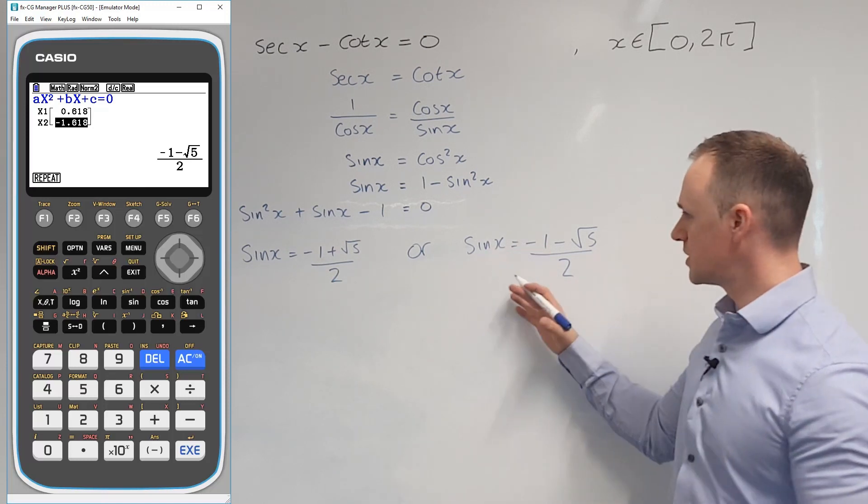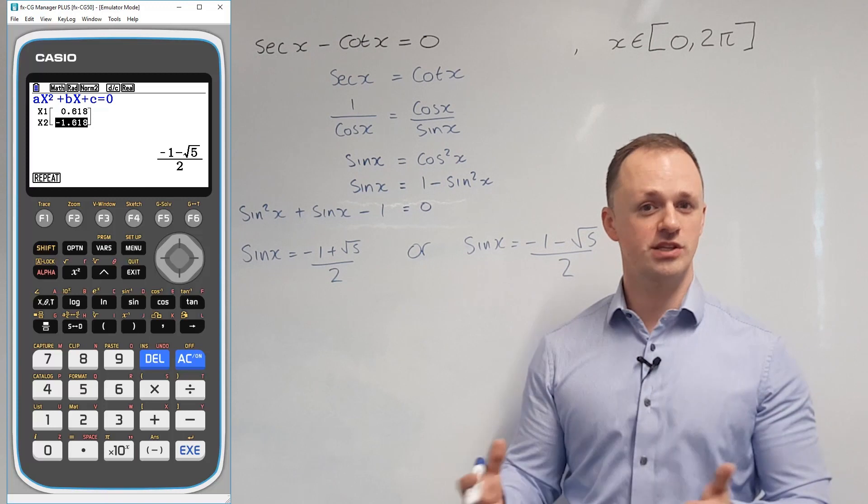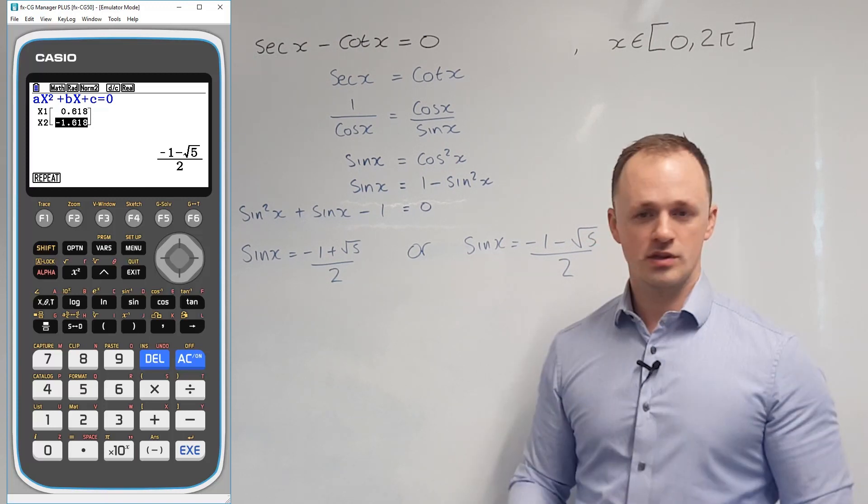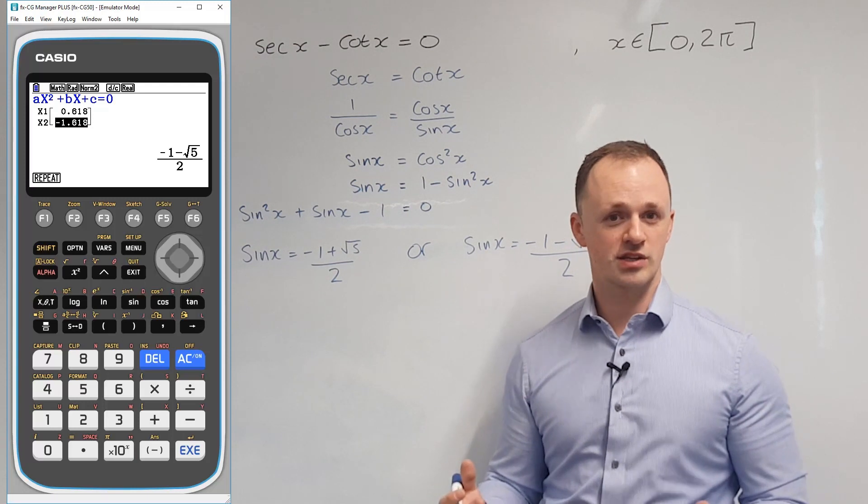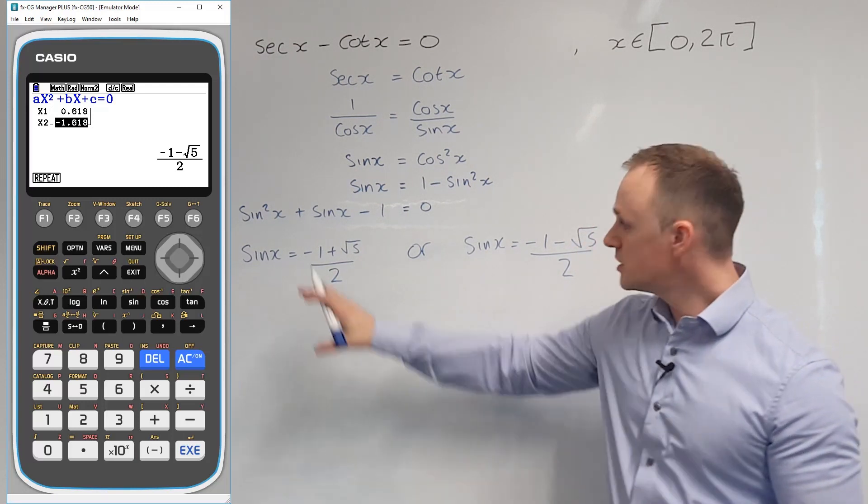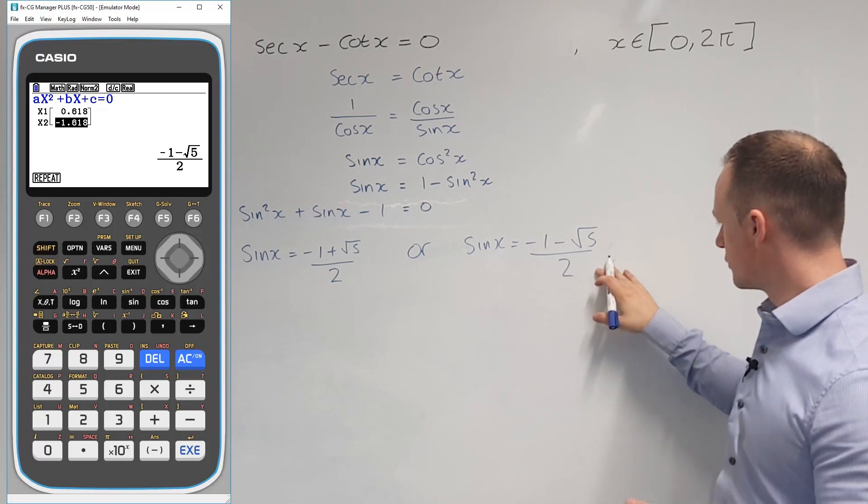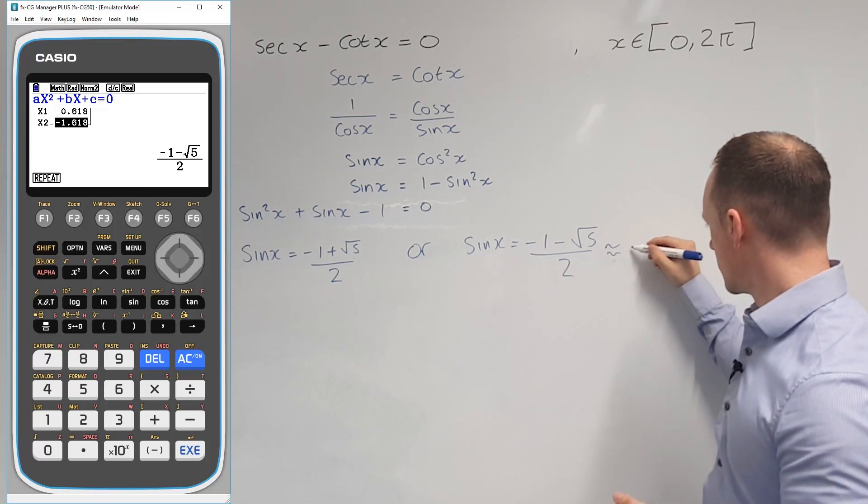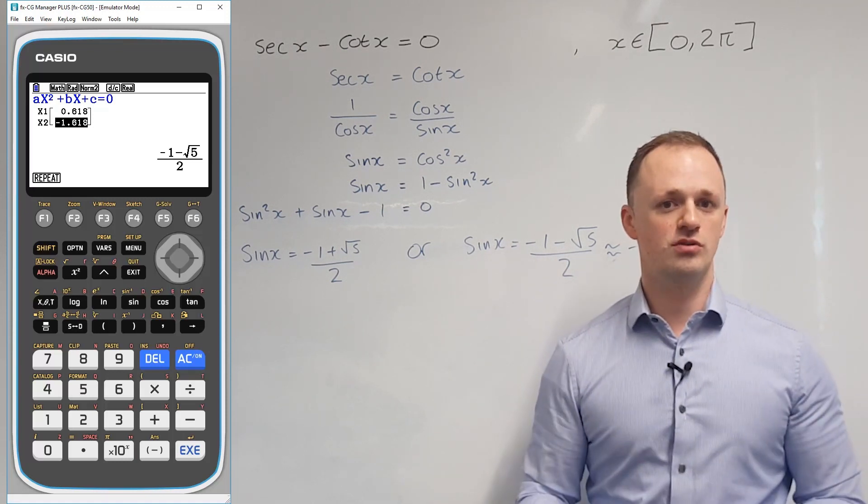Now, it's helpful to know what these are in terms of decimal approximations, because it will help us decide if these equations actually have any solutions. So minus 1 plus root 5 over 2 is approximately 0.6. Because that's between minus 1 and 1, this equation will have solutions. But for this one, minus 1 minus root 5 over 2 is approximately minus 1.6, so this equation here will have no solutions.